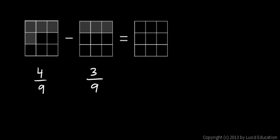And you should be able to see that if you have four of something, in this case four ninths, and you subtract three of that something, then you're left with one of that something. So over here, I can just shade in a single square, and that would be one out of the nine squares. That would be one ninth.